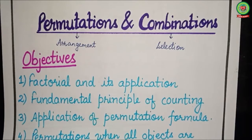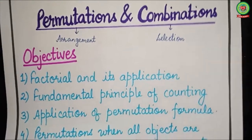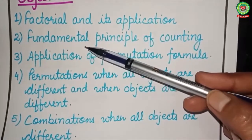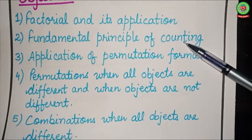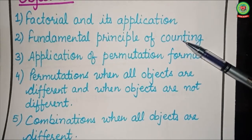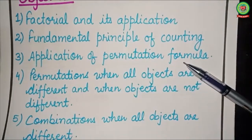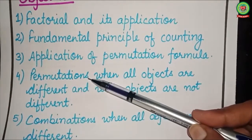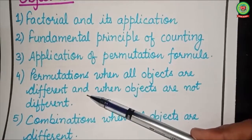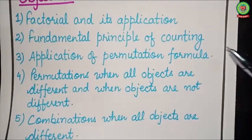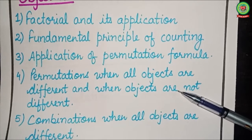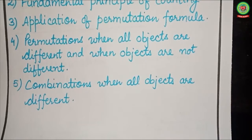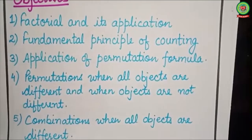The objectives of this chapter are: first, factorial and its application; second, the fundamental principle of counting, which helps us find the number of arrangements; third, application of the permutation formula for finding the number of arrangements; fourth, permutations when all objects are different and when objects are not different; and finally, combination when all objects are different.